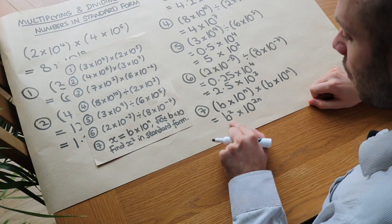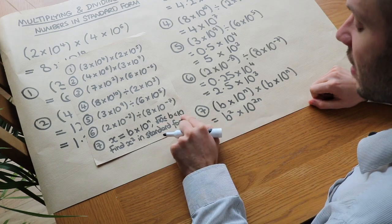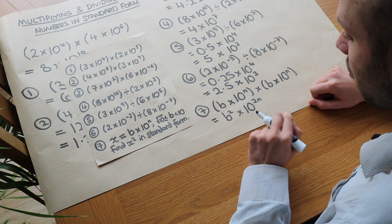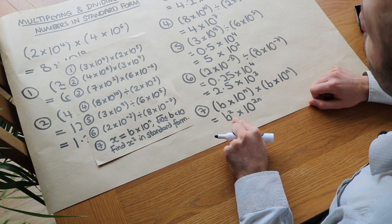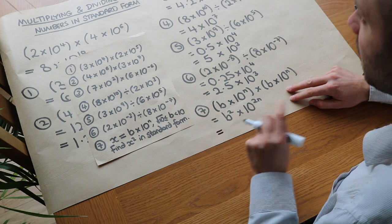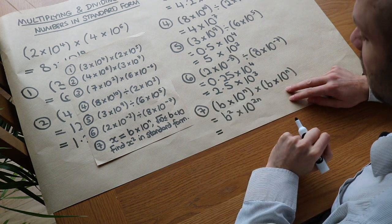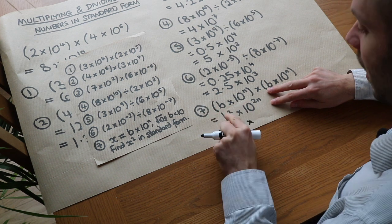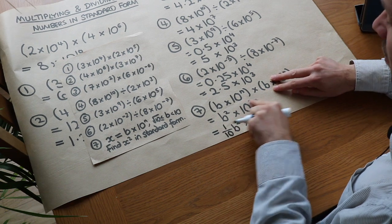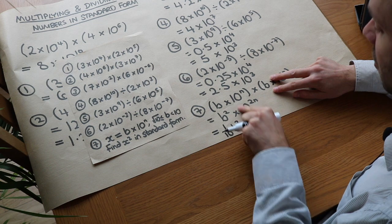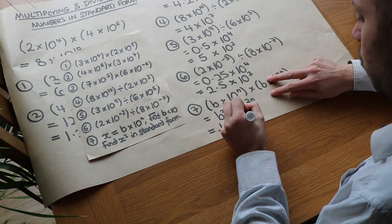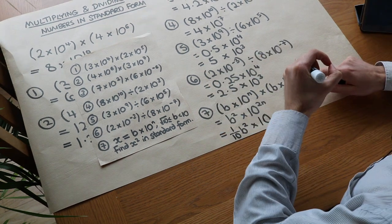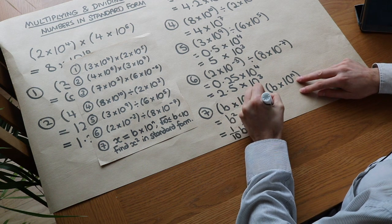This isn't in standard form because if b is between root 10 and 10, when we square it, it will be between 10 and 100. But we want it between 1 and 10, so we divide b squared by 10 — giving a tenth of b squared. To compensate, we make the power 10 times bigger, increasing it by 1. When we increase 2n by 1 it's not 3n — that would be 2n plus n — we want 2n plus 1, so it's 10 to the 2n plus 1.